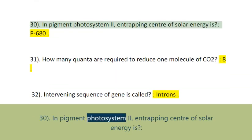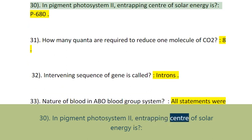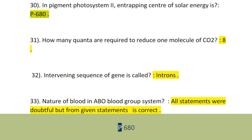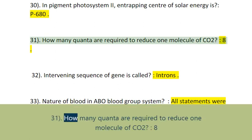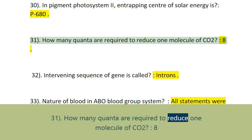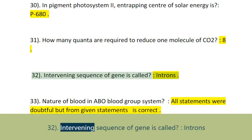Question 30: In photosystem 2, the trapping center of solar energy is P680. Question 31: How many quanta are required to reduce one molecule of CO2? 8.